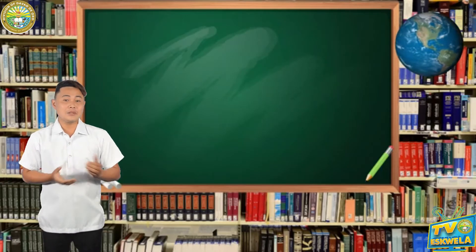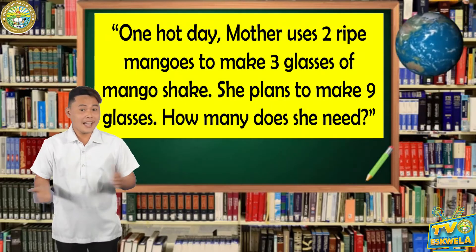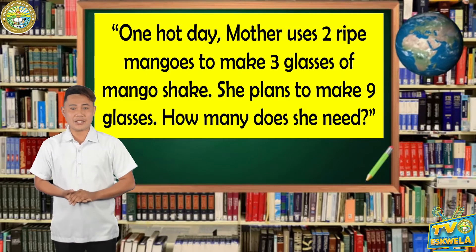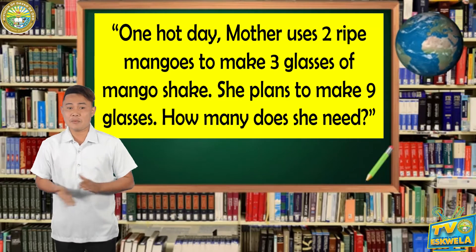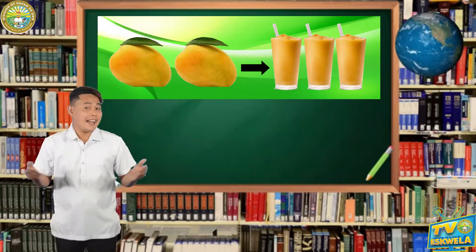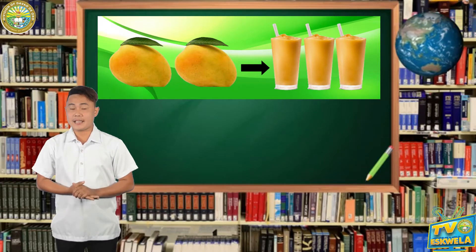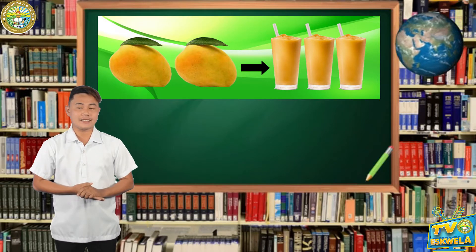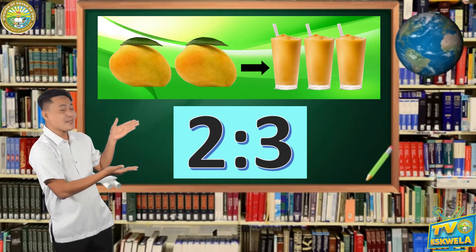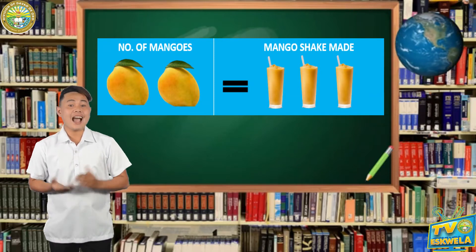Now, let us take a look and solve this word problem. One hot day, mother uses 2 ripe mangoes to make 3 glasses of mango shake. She plans to make 9 glasses. How many mangoes does she need? Let us find the ratio of the number of mangoes to the number of glasses. Very good! 2 is to 3. For every 2 ripe mangoes used, 3 glasses of mango shake are made.